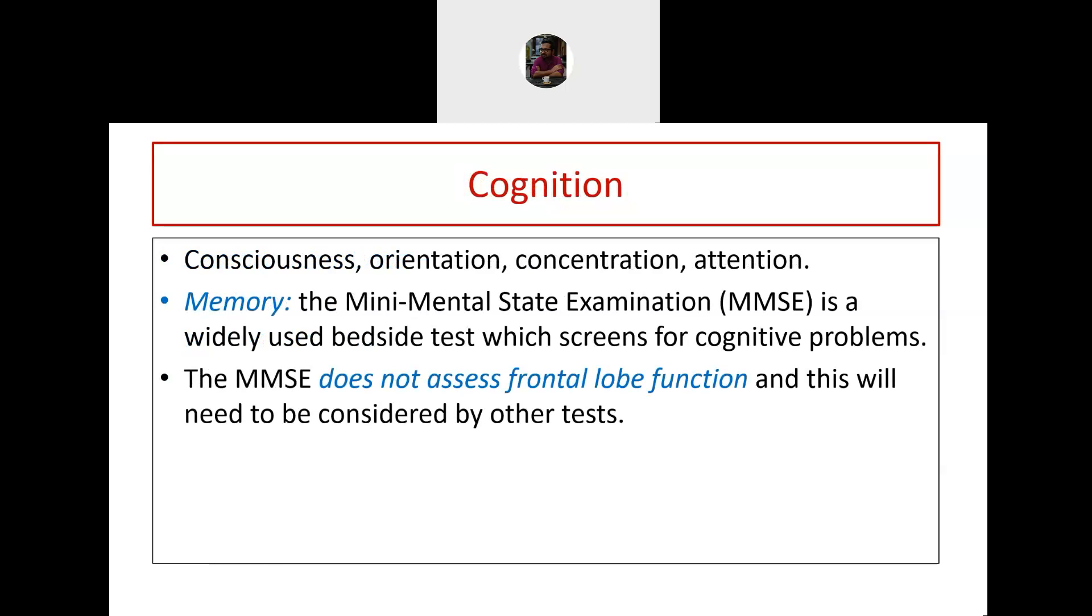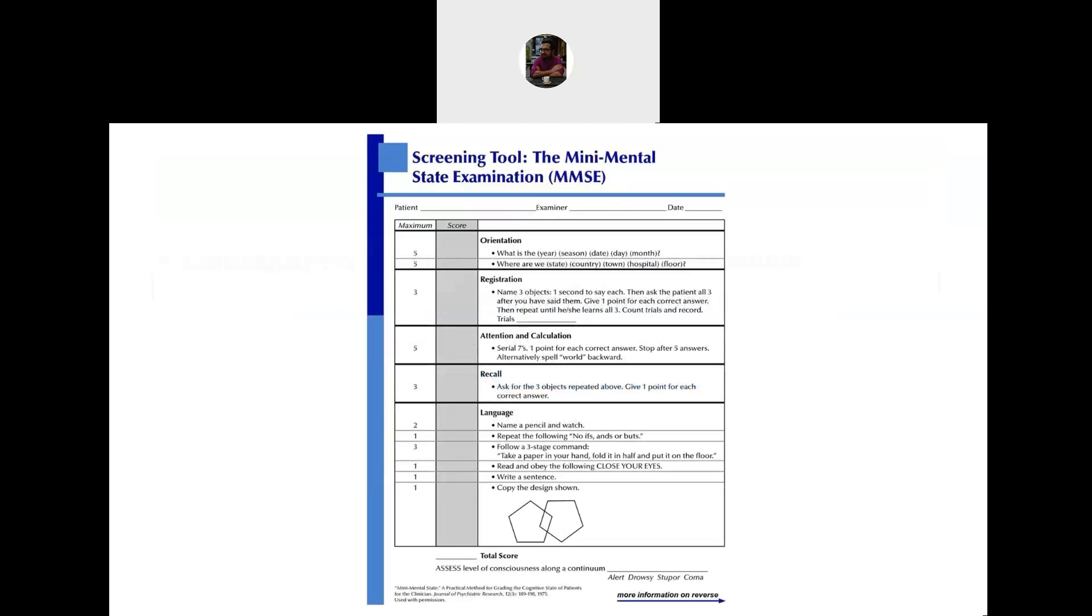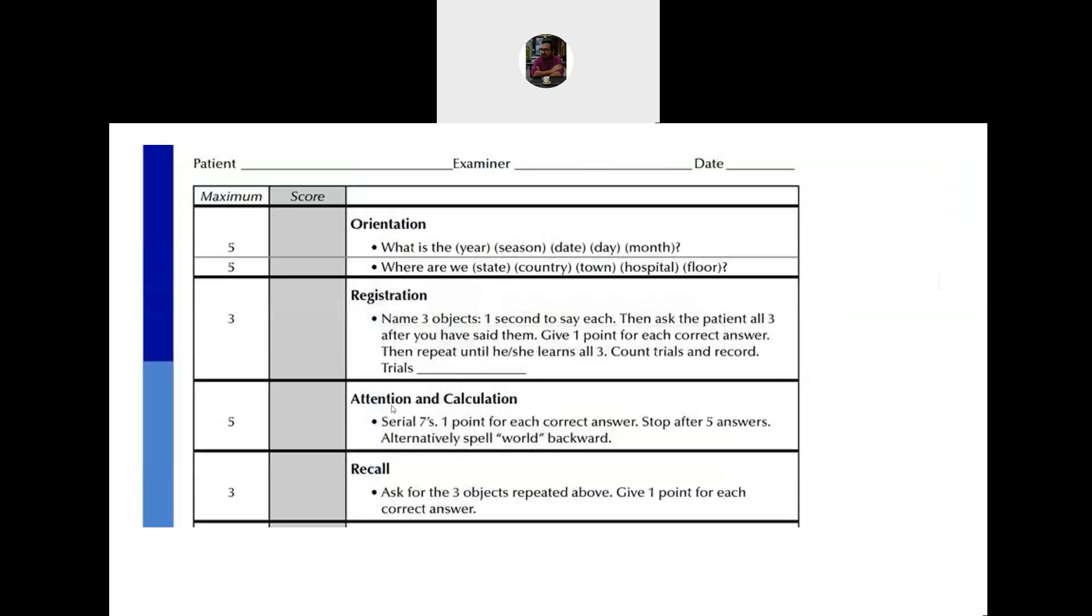Now coming to cognition, the overall intellectual function of the brain. This is something which is very subjective and difficult to assess. A highly overrated scale is the mini mental state examination scale. This scale actually is not a full proof test of the cognitive level of the person. Also the functions of frontal lobe are not properly assessed by the mini mental scale. Let us see how the mini mental scale looks like and try to understand what they indicate. This is how the mini mental scale looks like.